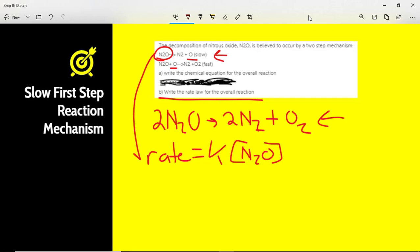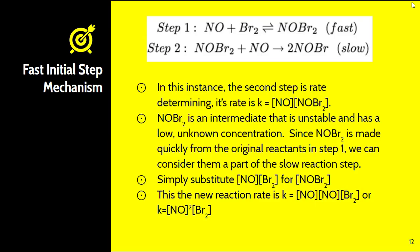When the first step is fast, things get a little trickier. In this case, the second step is rate-determining and its rate is k times the concentration of NO times the concentration of NOBr2. However, NOBr2 is an intermediate — very unstable with an unknown concentration. Since NOBr2 is made so quickly from the original reactants in step one, we substitute the reactants of step one in for NOBr2.